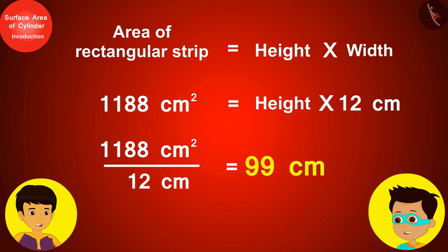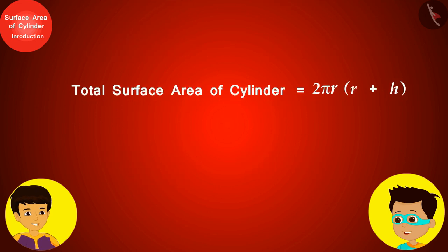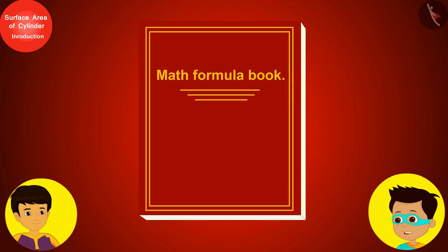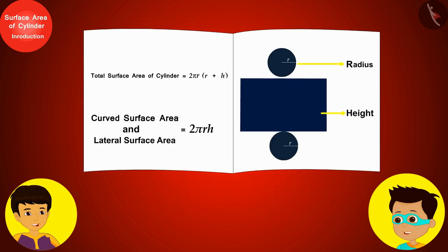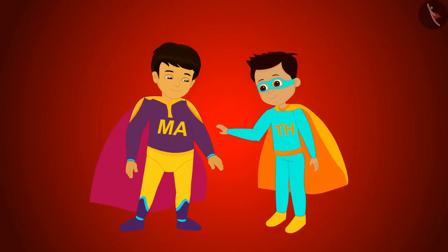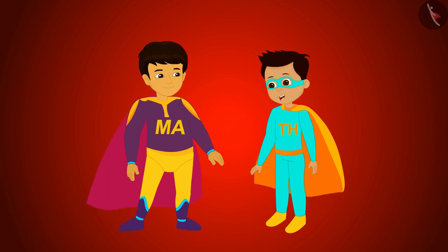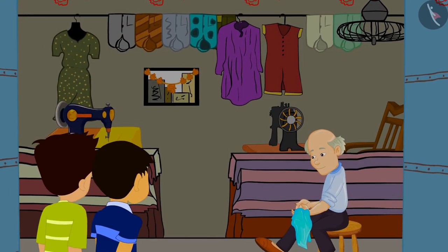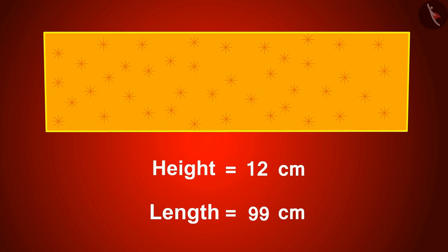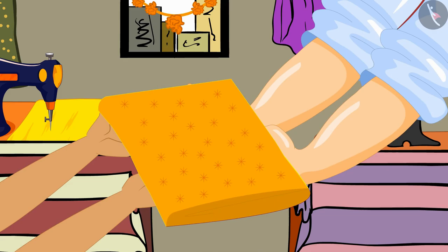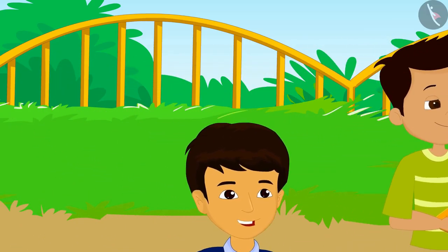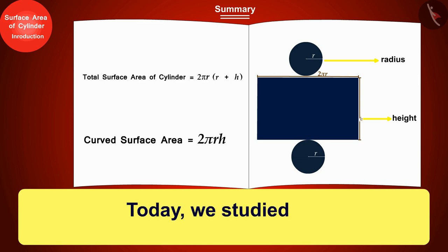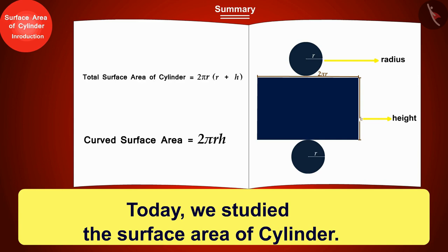Today we learned the formula for the total surface area and the lateral surface area of a cylinder. Let me quickly write them in my math formula book. Thomas bought a 99 centimeter long and 12 centimeter broad cloth from the tailor, and the two friends returned to their homes. In the next video, we will see some interesting examples based on the surface area of a cylinder.